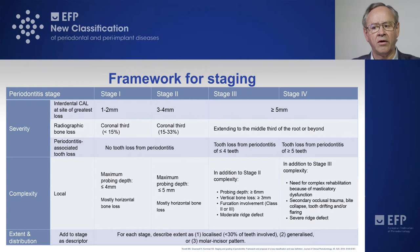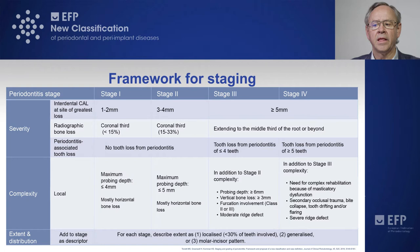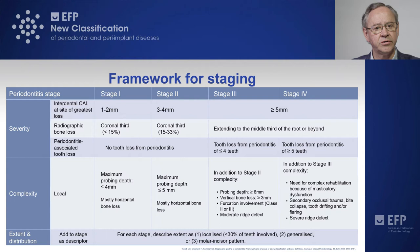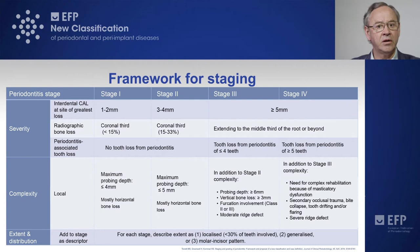This table shows all the different thresholds and criteria that define the different stages. In stage one, the degree of interdental clinical attachment loss is between one and two millimeters. Bone loss affects the coronal third of the root, less than 15 percent. Patients have not lost teeth due to periodontitis, probing depths are four millimeters or less, most detectable bone loss is horizontal, and the extent can be localized — affecting less than 30% of teeth — or generalized.